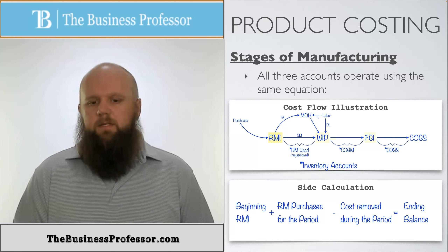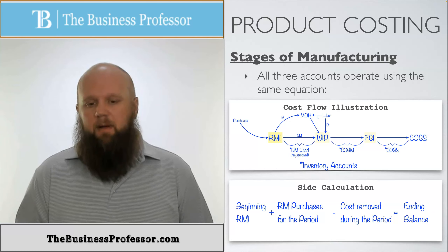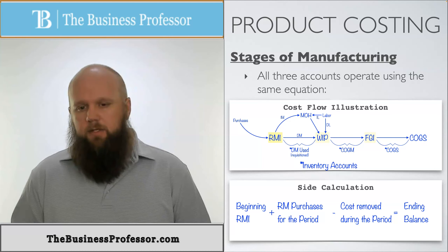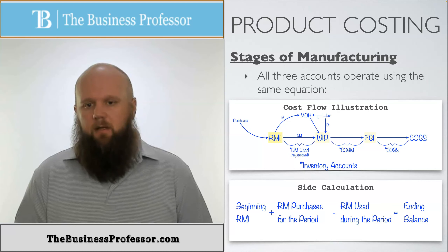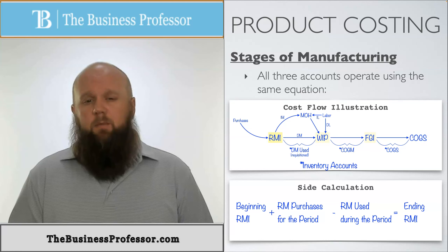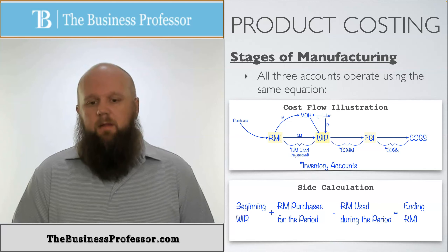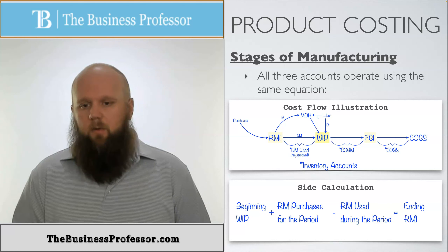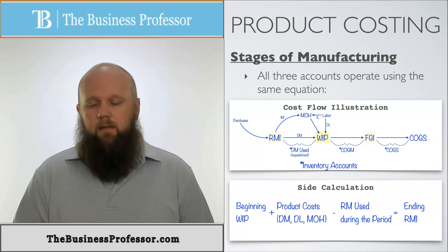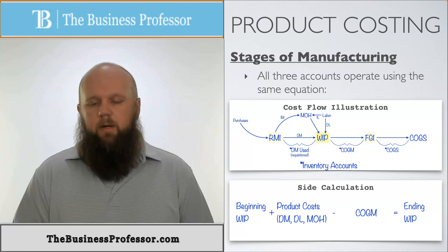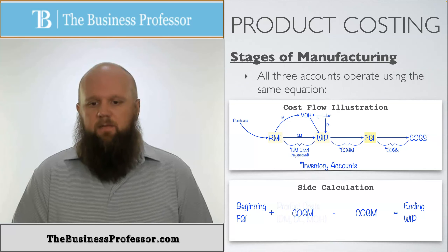Let's go through these individually. For raw materials inventory: beginning raw materials, plus raw materials purchased, minus raw materials used (both indirect and direct material), gives the ending RMI balance. For work in process: beginning WIP, plus the three inputs — direct material, direct labor, and manufacturing overhead — minus cost of goods manufactured (the arrow going out), gives ending work in process. For finished goods inventory: beginning FGI, plus cost of goods manufactured, minus cost of goods sold, gives ending FGI.